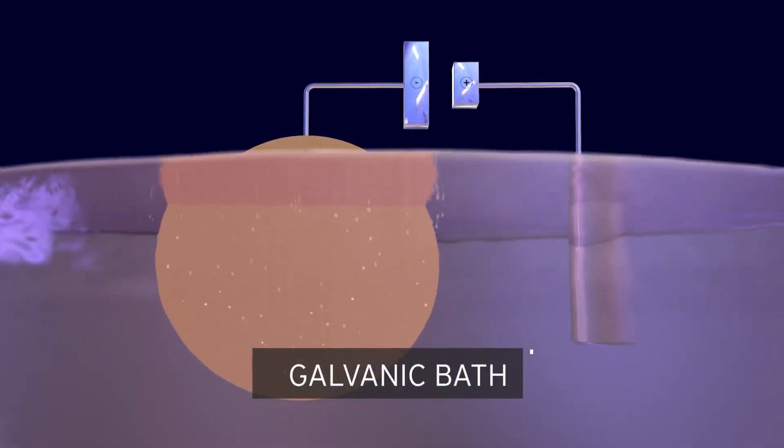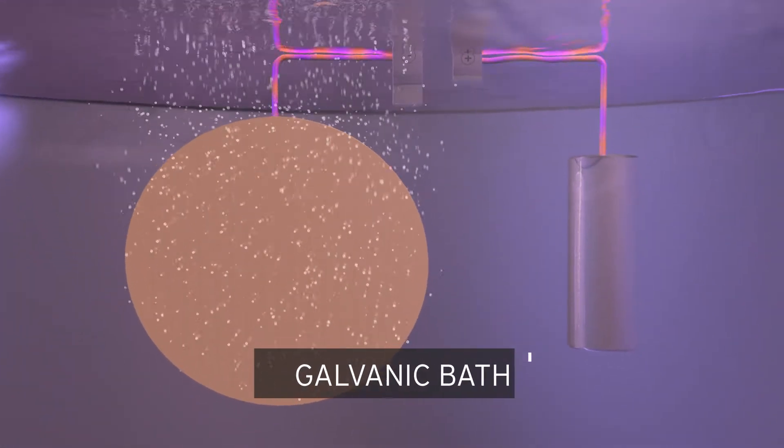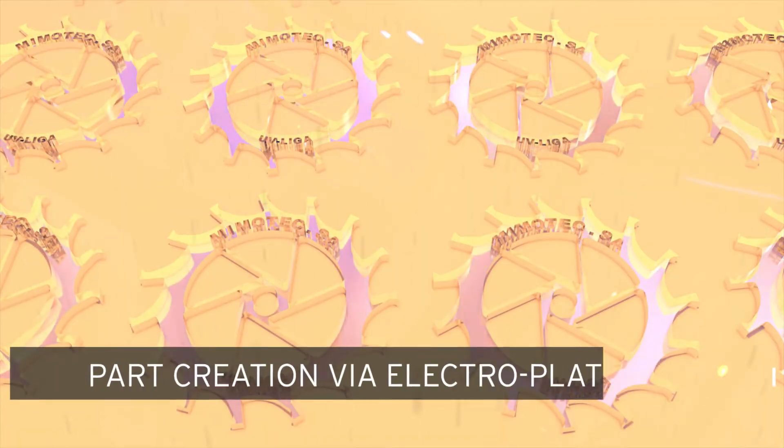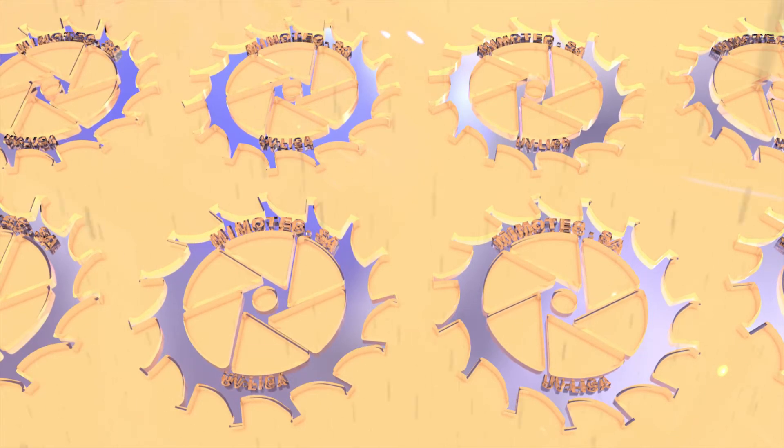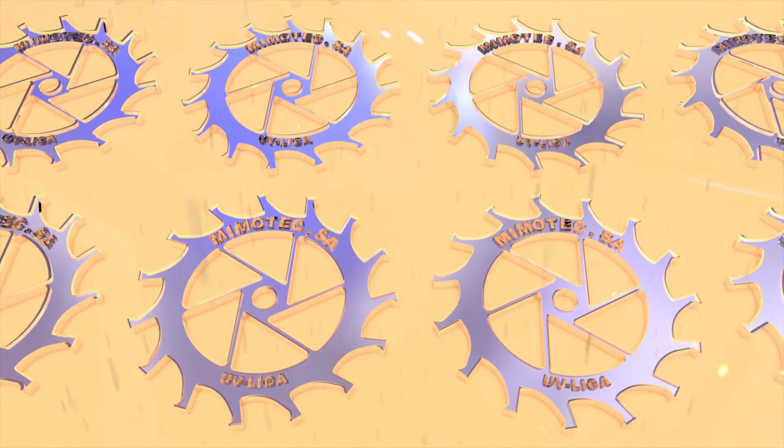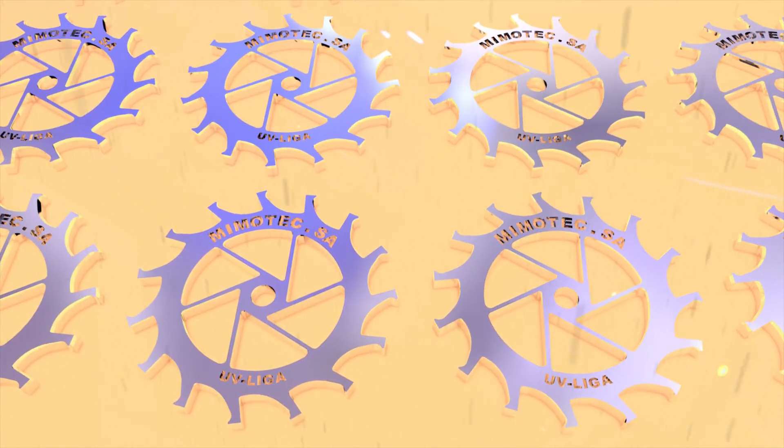The wafer is immersed in a galvanic bath and undergoes voltage in order to start galvanic part growth. Atom by atom, the cavities are filled with metal. Many metals can be used, such as nickel alloys and even 24-karat gold.